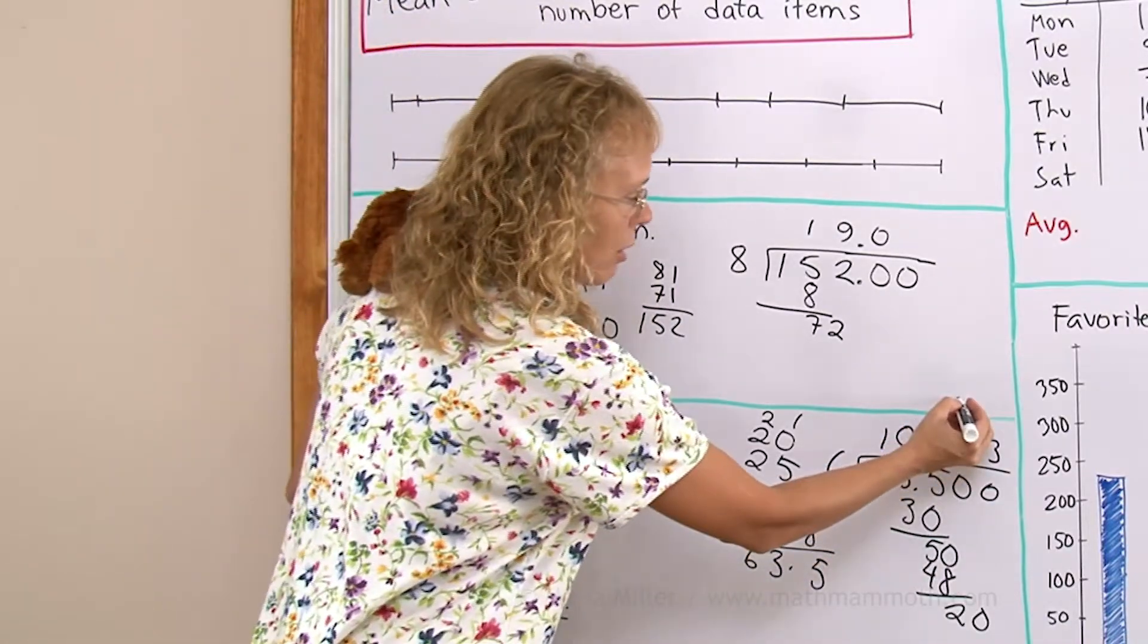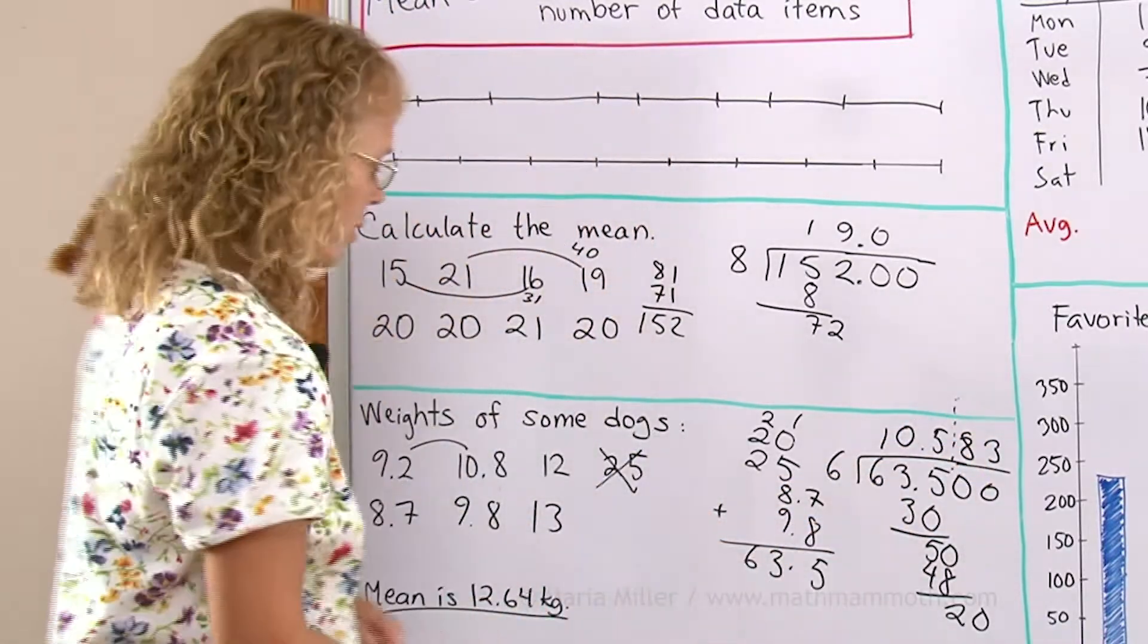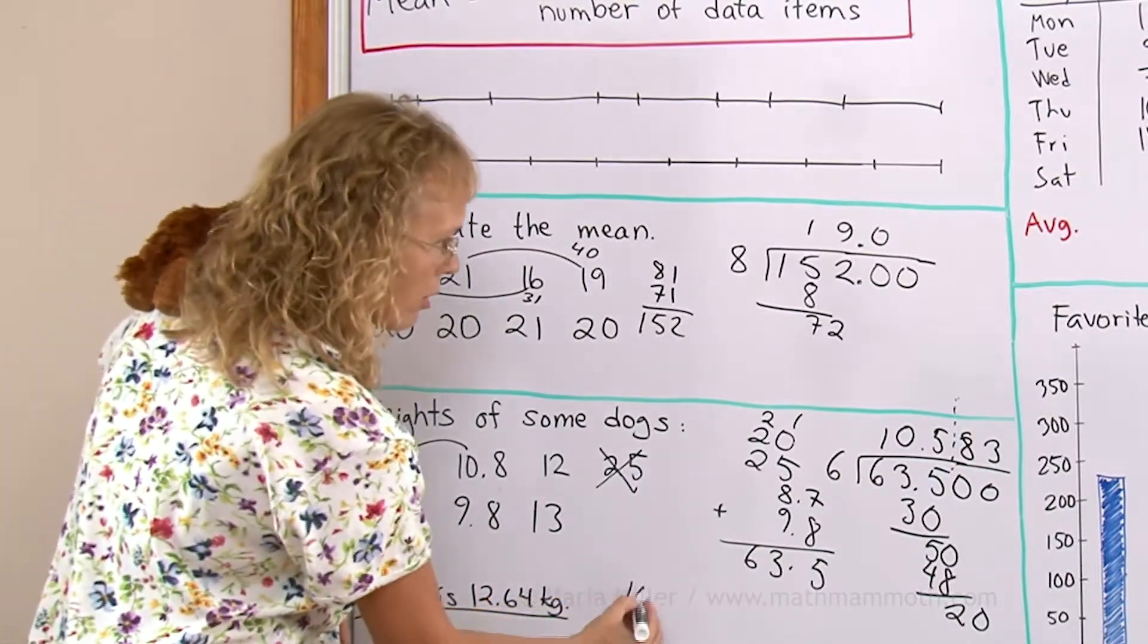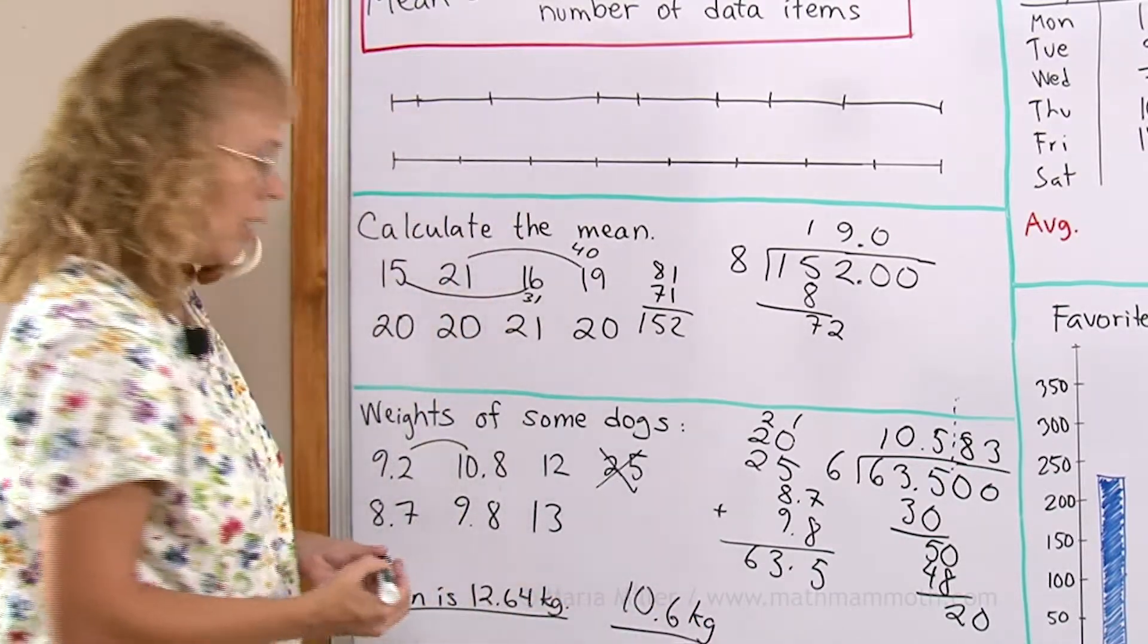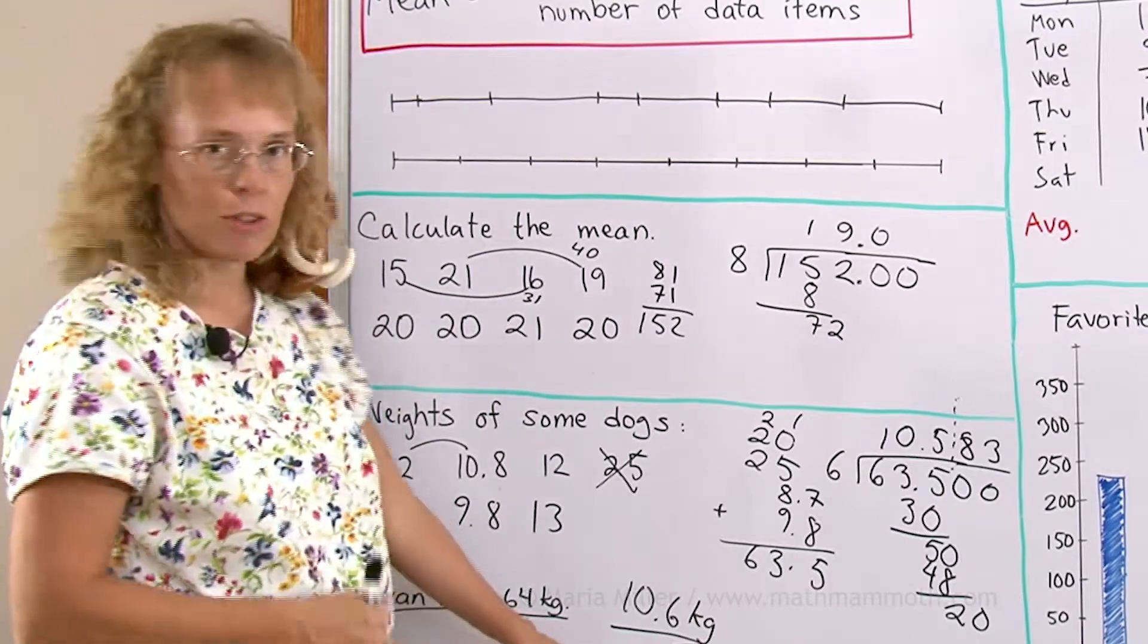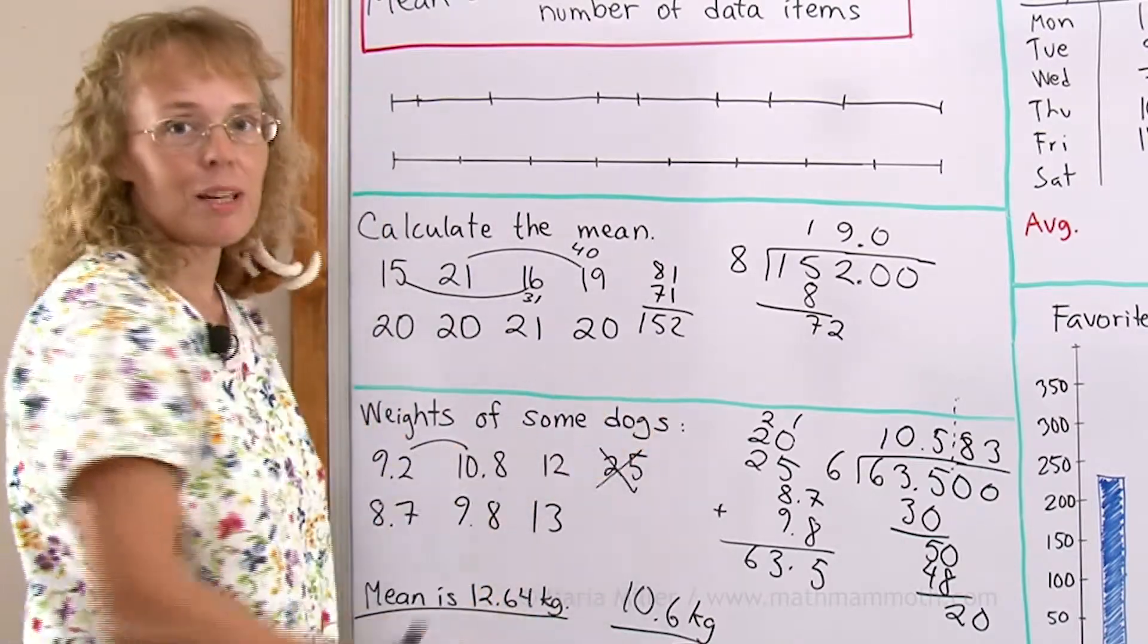So, maybe I want to round it here. The new average will be 10.6 kilograms. So, the average actually dropped over 2 kilograms just by removing that one dog.